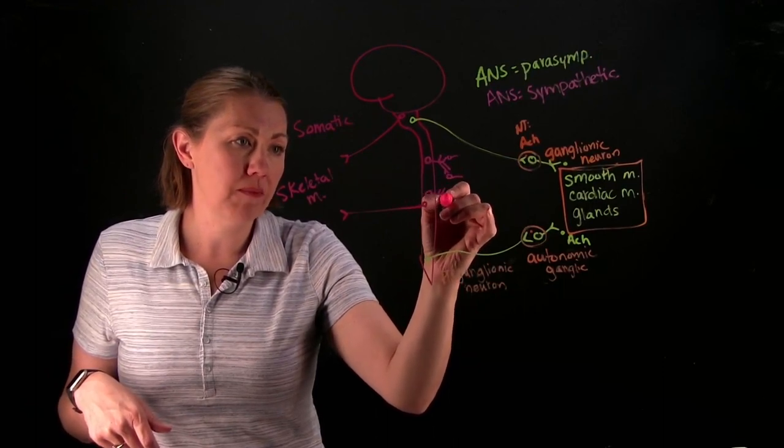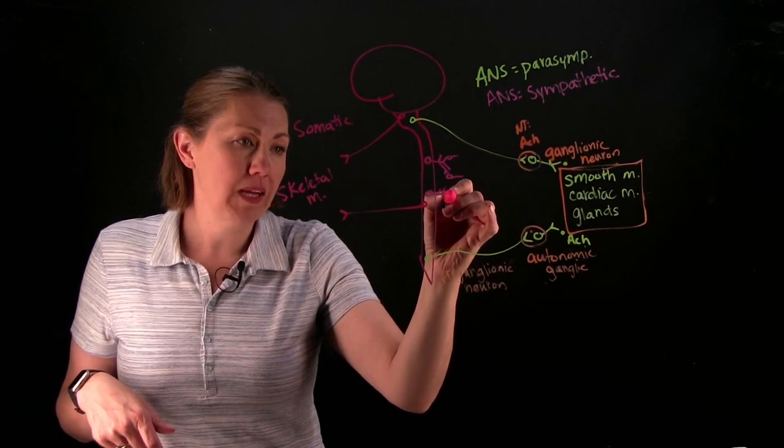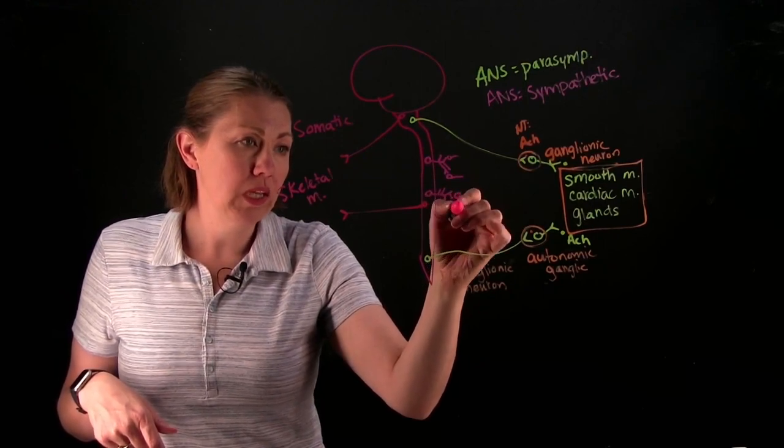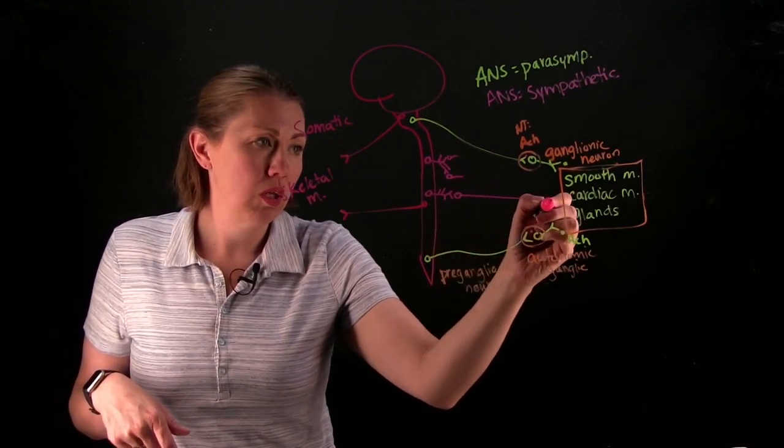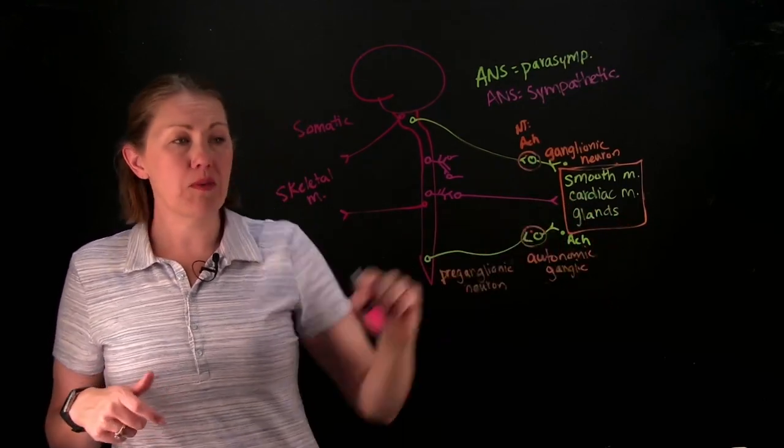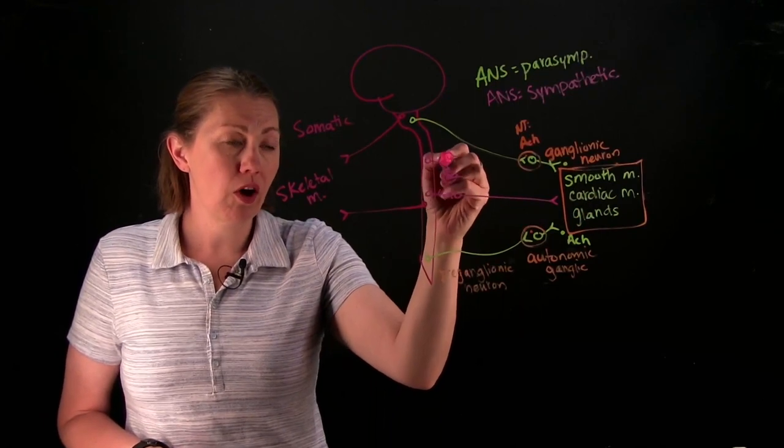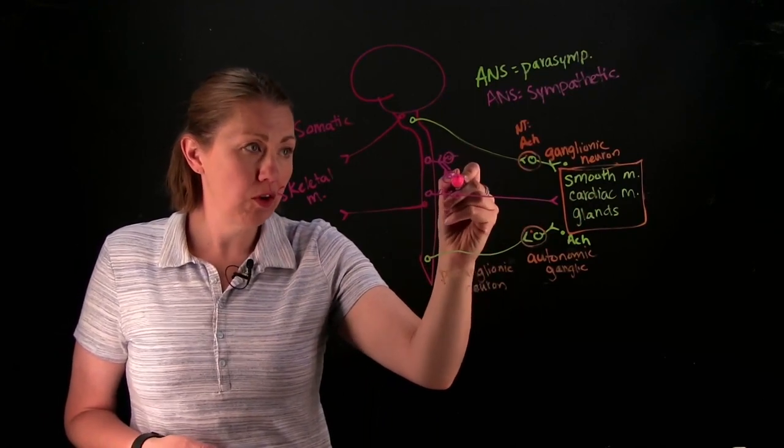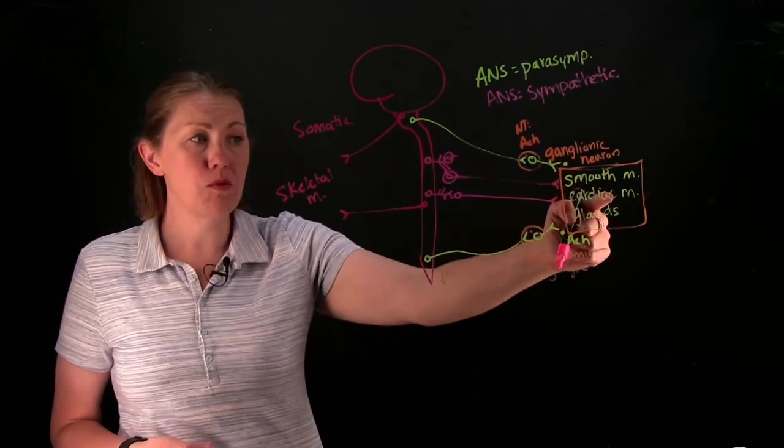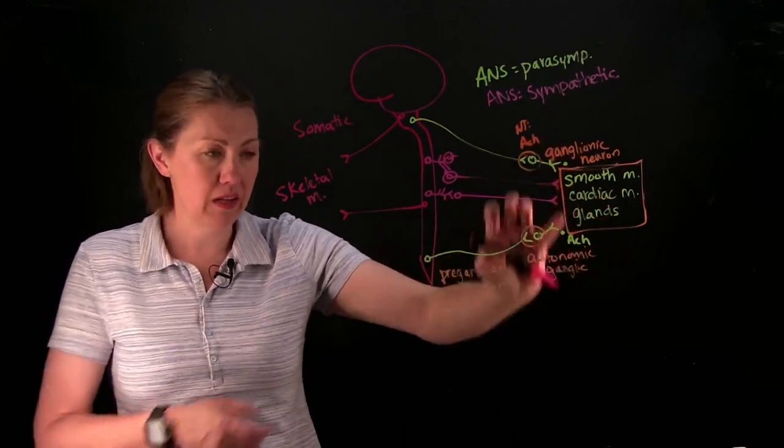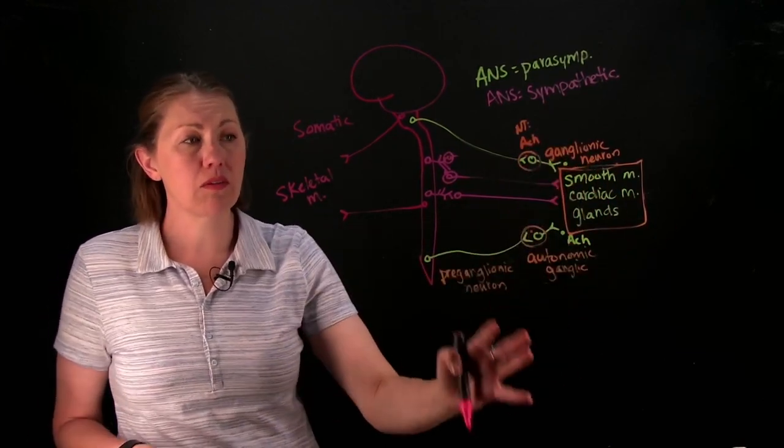You'll have a bunch of branching and your autonomic ganglia is really close to your spinal cord and far away from the target. So the first cell is really short and branchy. Then you have your autonomic ganglia and then you'll go to your targets. And again, your target's still smooth muscle, cardiac, and glands. That's why I did this thing in orange here to kind of show there are things that are similar.